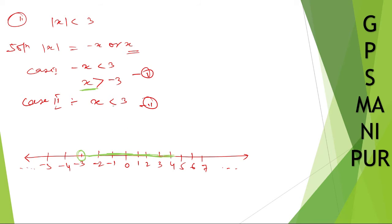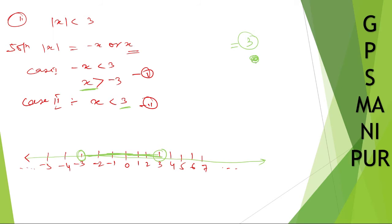And x is less than 3 — it is not equal to 3, so you draw just a circle. If it were equal to 3, you would draw a filled mark. Since it is less than 3 and greater than minus 3, this is your number line. I know it is a little bit untidy — please forgive me.